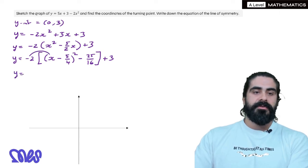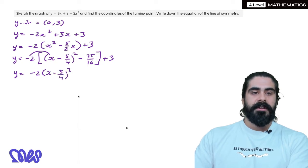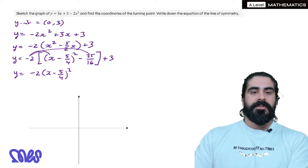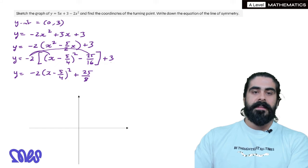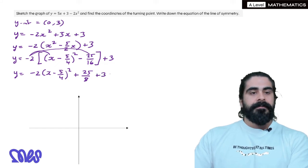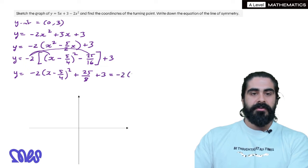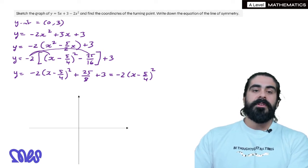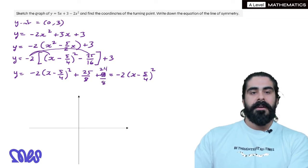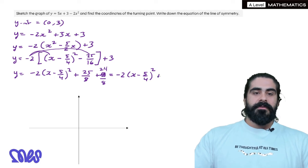So now we're multiplying the minus 2. It'll be minus 2 lots of x minus 5 over 4 squared. Then minus 2 times minus 25 over 16 will be plus 25 over 8. And then we have the plus 3 at the end. So when we simplify that, we get minus 2 x minus 5 over 4 squared. Now 25 over 8 plus 3, we can rewrite 3 as 24 over 8. And then we have 25 plus 24, which is 49 over 8.